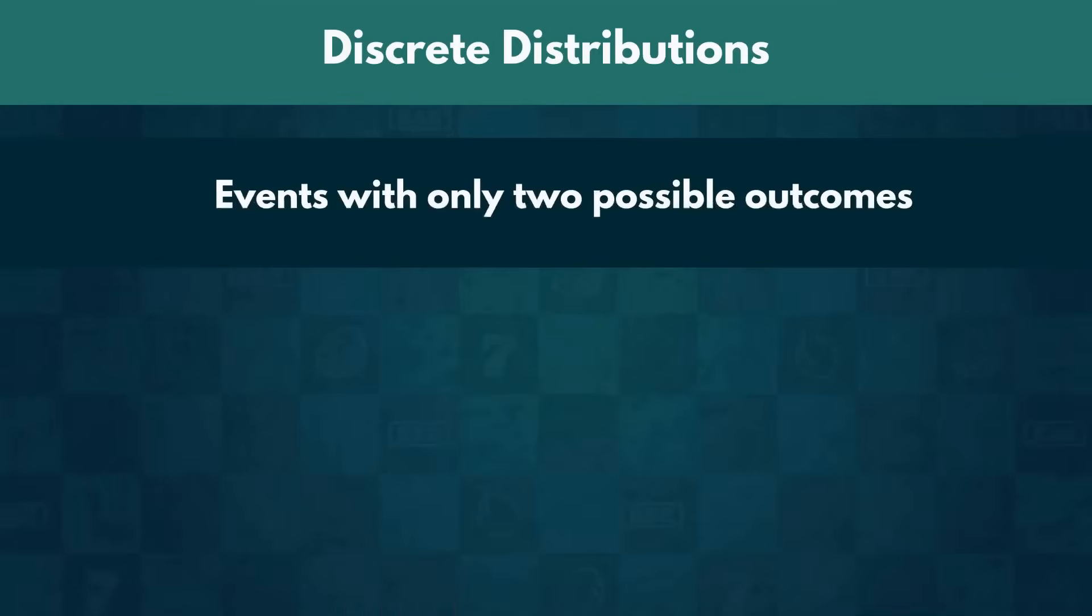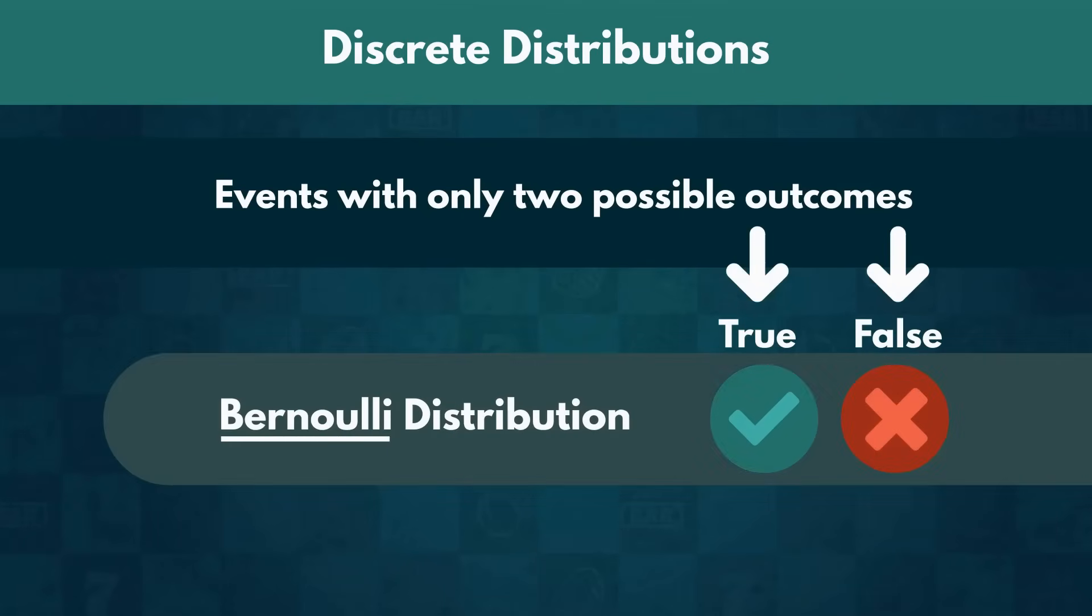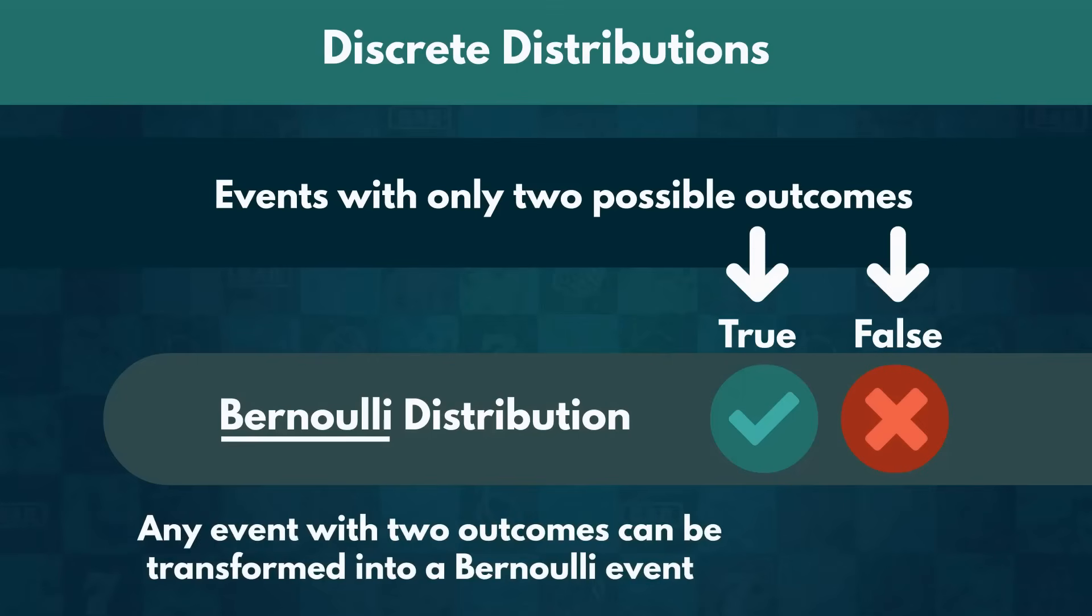Then, there are events with only two possible outcomes – true or false. They follow a Bernoulli distribution. Regardless of whether one outcome is more likely to occur, any event with two outcomes can be transformed into a Bernoulli event. We simply assign one of them to be true and the other one to be false.